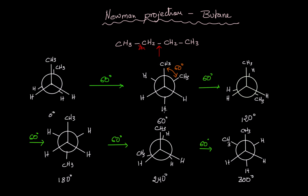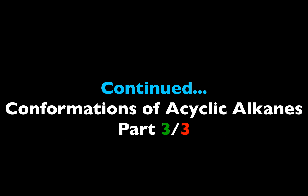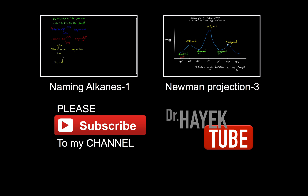One more 60 degrees takes us back to the original zero degree conformation. The 60 degree and 300 degree staggered conformations are called gauche conformations. The 180 degree conformation is called the anti conformation — this is where you have 180 degrees between the two substituents and they are as far apart as possible from each other.